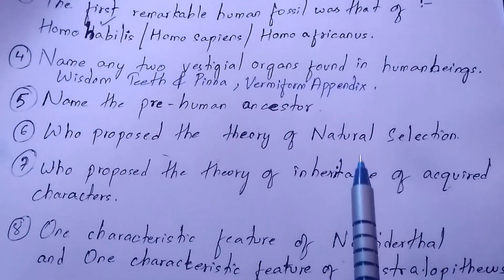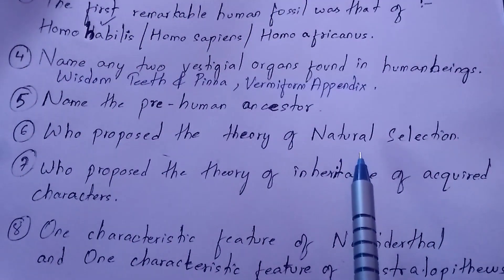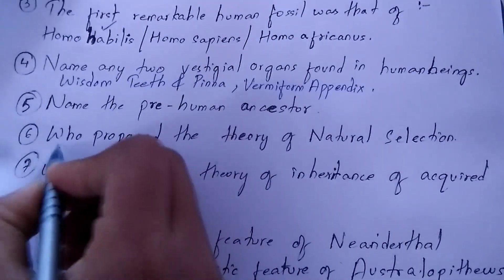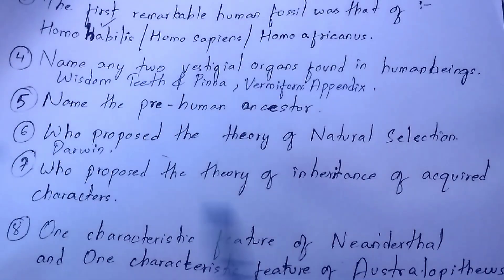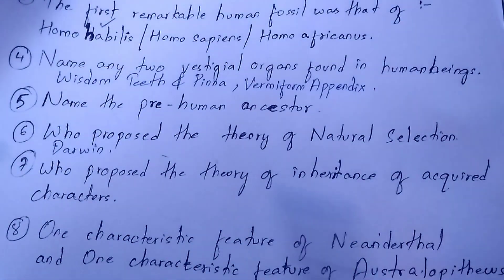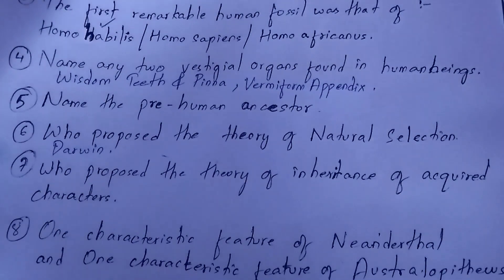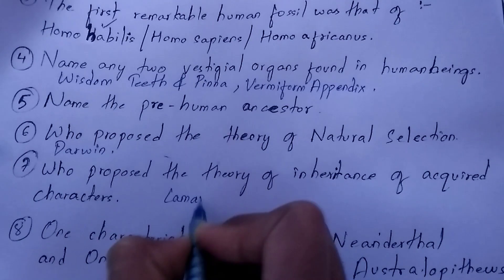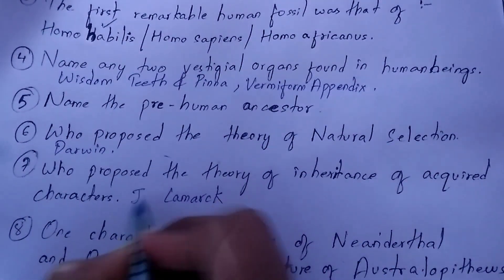Question number six: who proposed the theory of natural selection? The scientist who proposed the theory of natural selection was Darwin. Question number seven: who proposed the theory of inheritance of acquired characters? The person who proposed this theory is Lamarck. Be careful with your spellings — it is L-A-M-A-R-C-K — and write the full name: J.B. Lamarck.